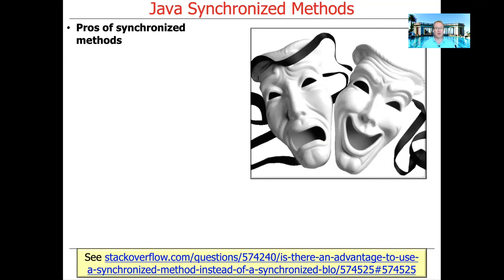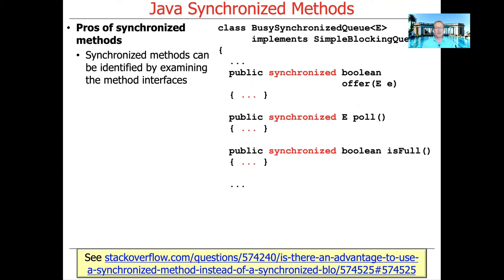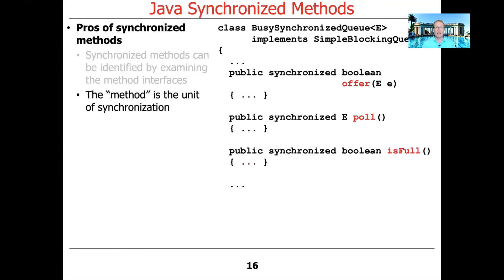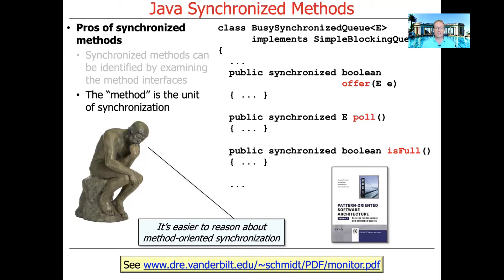Let's briefly talk about the pros and cons of synchronized methods, starting with the pros. Synchronized methods are easy to identify because you just look for the synchronized keyword — at a glance you can say this is a synchronized method, and that's typically an indication that this is a monitor object. Another nice thing is that the method is the unit of synchronization, which is very easy to reason about. You know that if that method is called, it gets exclusive access to any shared state, making method-oriented synchronization fairly straightforward.